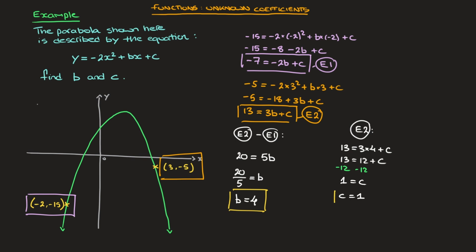And we're done. We've now found the two unknown coefficients b and c. We could finish by stating this parabola's full equation: y equals negative 2x squared plus 4x plus 1. That's it for this video on functions in which we find unknown coefficients.